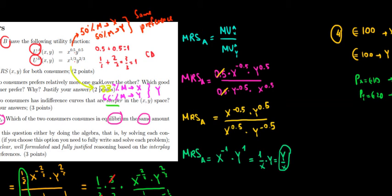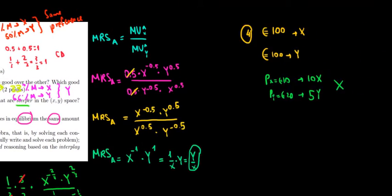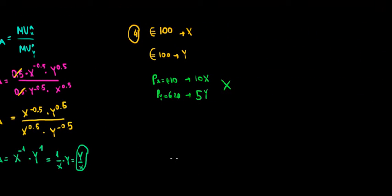What do we know about consumer B? Consumer B spends 33% of his income on X, 66% of his income on Y. So he spends twice as much on Y as he does on X. Now what does that mean? Well if that is the case, then instead of having let's say 100 euros on X and 100 euros on Y, maybe the relationship is,